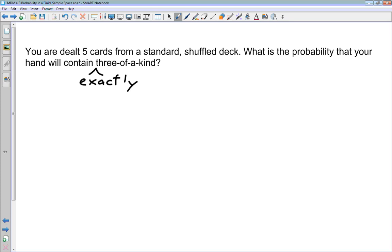Let's start first with our sample space. What is our sample space in this question? Fifty-two choose five. We want all of the possible five-card hands here.